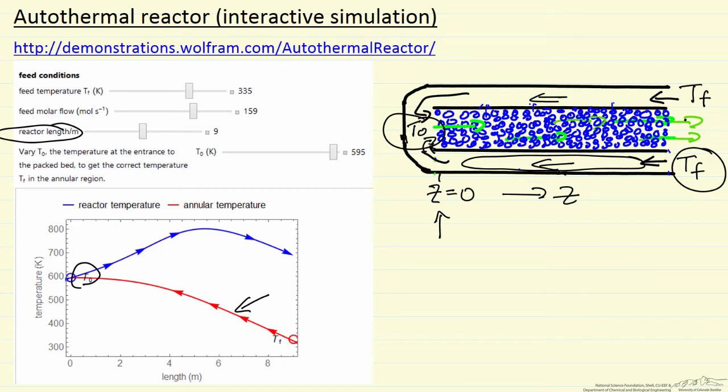In solving these equations, because we don't know T0, we don't know this temperature when we start to solve the differential equations as an initial value problem, we guess this temperature T0. If we get the right guess, then we solve these equations by increasing z, and we would get our correct feed temperature here. The simulation allows you to change this value of T0 to get the correct answer.